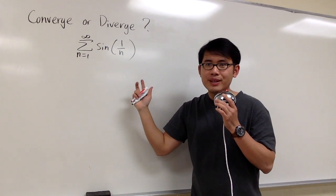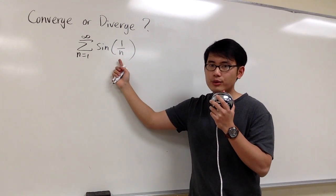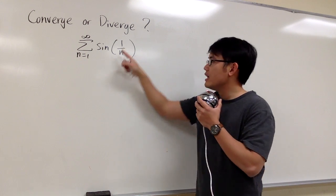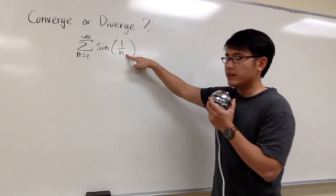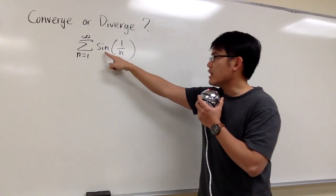But then as a good habit, we should just look at the expression first, and then let n go to infinity to see what happens. If we have n goes to infinity, then we will have 1 over infinity, which is 0, and then sine of 0 is 0.